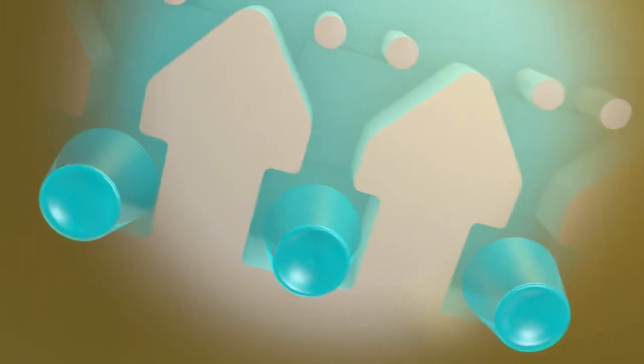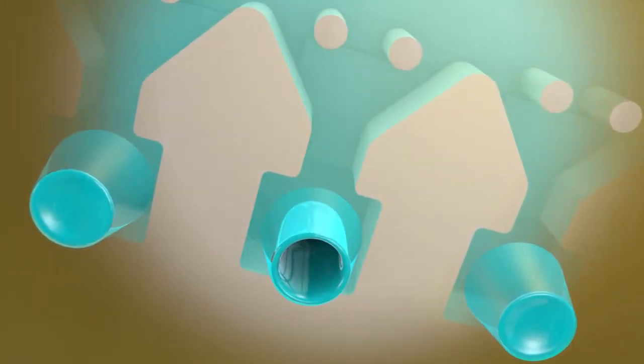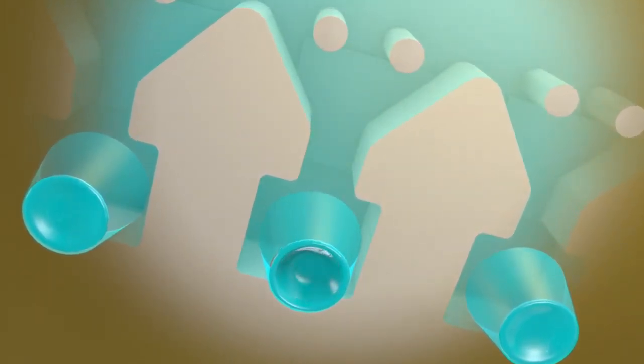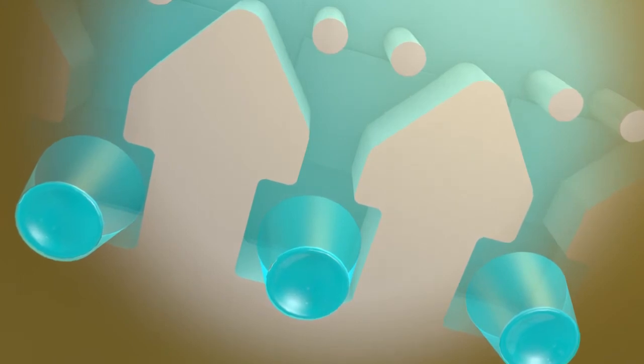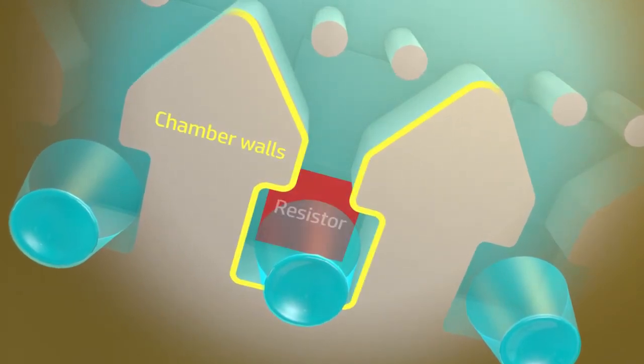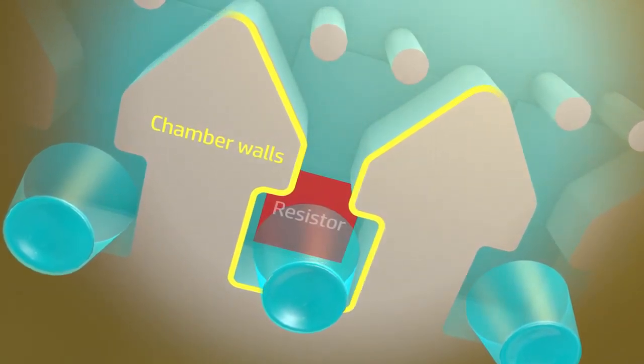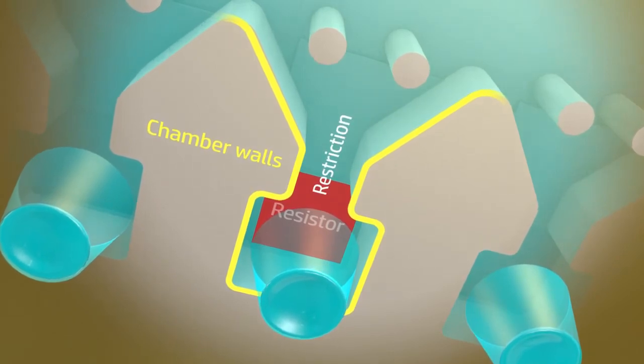Let's take a closer look at a drop generator. So you can see inside, we've made the nozzle plate and cyan ink transparent. Three walls surround a heater resistor on the silicon, and the chamber is open to the ink supply through a restriction.